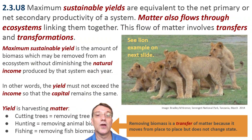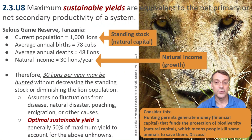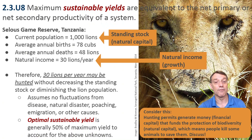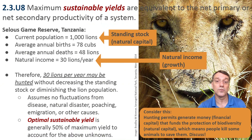Maximum sustainable yields are equivalent to the net productivity of a system. Matter also flows through ecosystems, involving transfers or movements from place to place, and transformations — changes in state or form. A sustainable yield is the amount of biomass that can be removed from the system without diminishing its natural regeneration rate. For example, consider lions in Tanzania: if we have 1,000 lions, 78 are born every year, and approximately 48 die natural deaths, the natural income is 30 lions per year. Theoretically, 30 lions could be sustainably harvested every year. However, the optimal sustainable yield is typically about 50% of this to account for uncertainties such as disease outbreaks, natural hazards, or storm events.